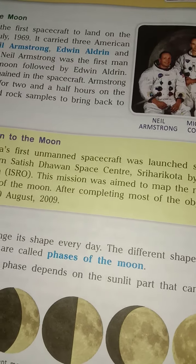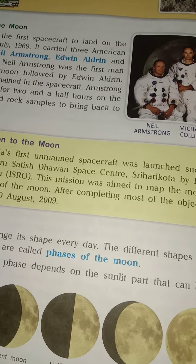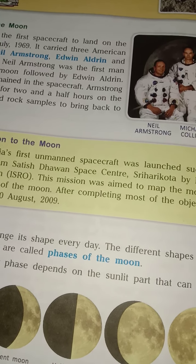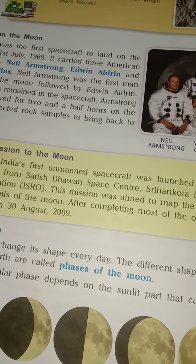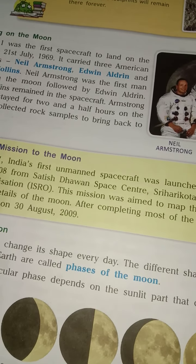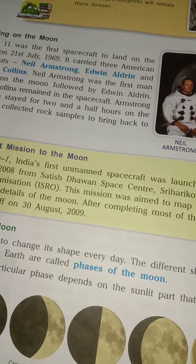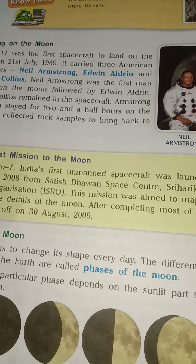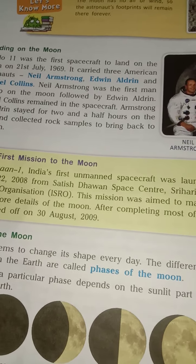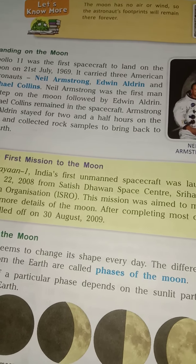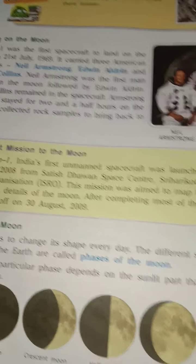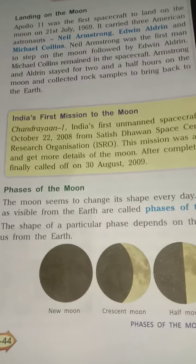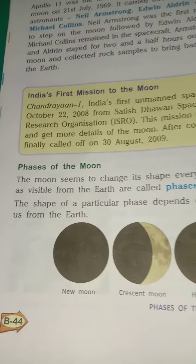Good morning dear students. Today we are going to start our second part of chapter lesson 12: The Earth, the Sun and the Moon. In the previous class we discussed the first part about the Earth, Sun and Moon. Today our new topic is phases of the Moon.